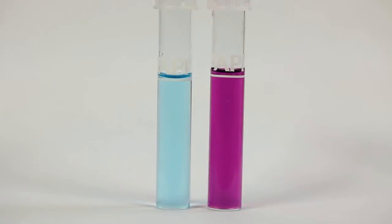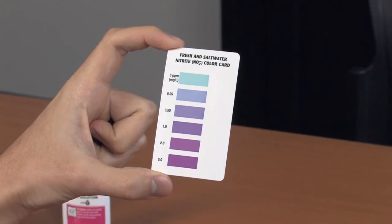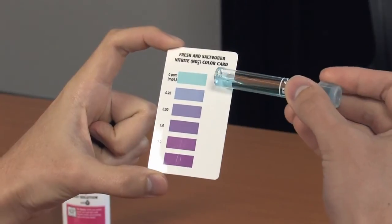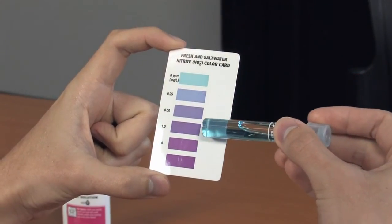The test tube will change from pale blue to purple if nitrite is present. Compare the test tube to the color chart. The closest match indicates the nitrite level.